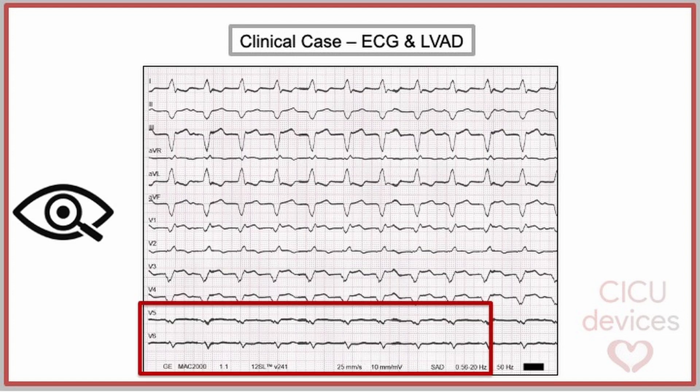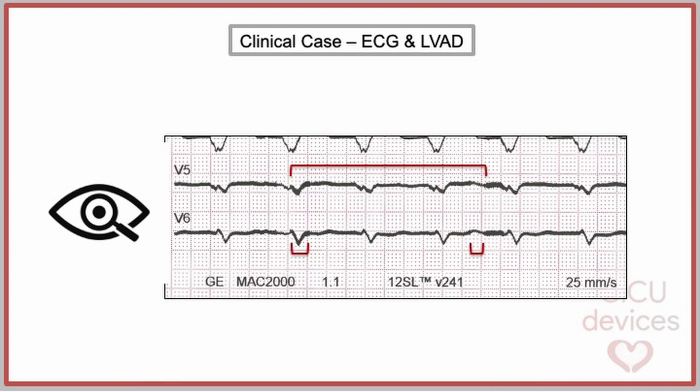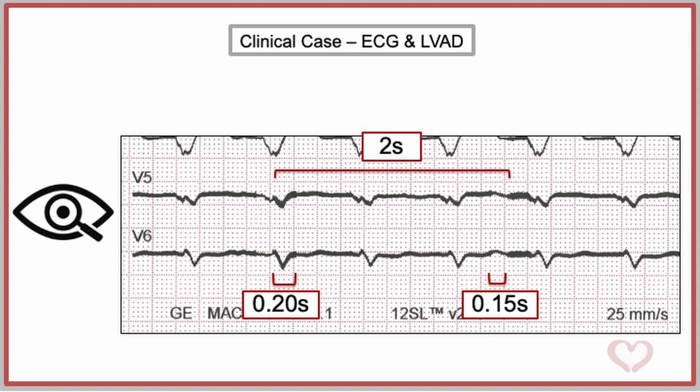Continuing with the present case, if we closely analyze the ECG recording, we can observe subtle changes in the artifact generated by the LVAD. Increasing the zoom, those subtle oscillation changes become more evident. Specifically, we can detect repetitive cycles with a duration of 2 seconds. Within this cycle, we can identify an interval of approximately 160 ms with lower oscillation frequency and amplitude, and another interval of approximately 200 ms with higher oscillation frequency and amplitude.